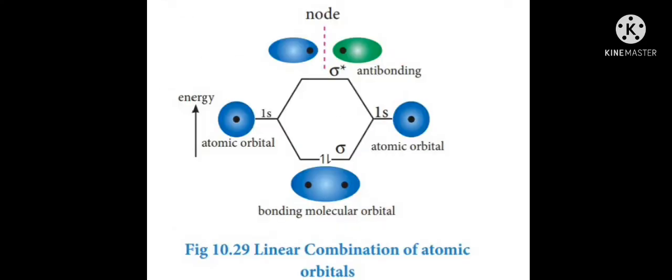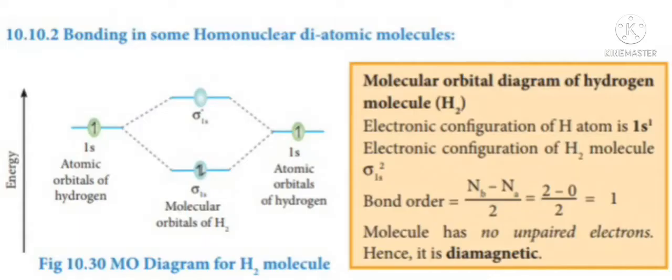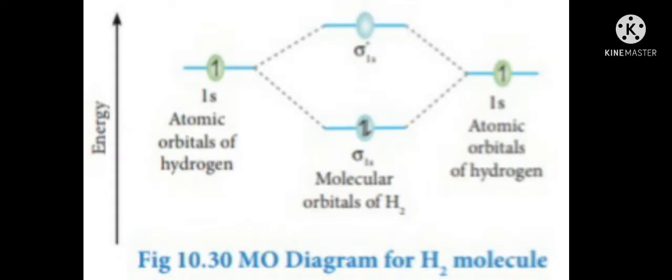The linear combination of atomic orbitals is shown here. Next, let us discuss bonding in some homonuclear diatomic molecules, explained on the basis of molecular orbital diagrams. First, let us discuss the formation of hydrogen molecule using the molecular orbital diagram. This shows the molecular orbital diagram for hydrogen molecule. Whenever two hydrogen atoms combine together, they form a hydrogen molecule. The atomic orbital of one hydrogen atom combines with the atomic orbital of another hydrogen atom to form the molecular orbital of the hydrogen molecule.